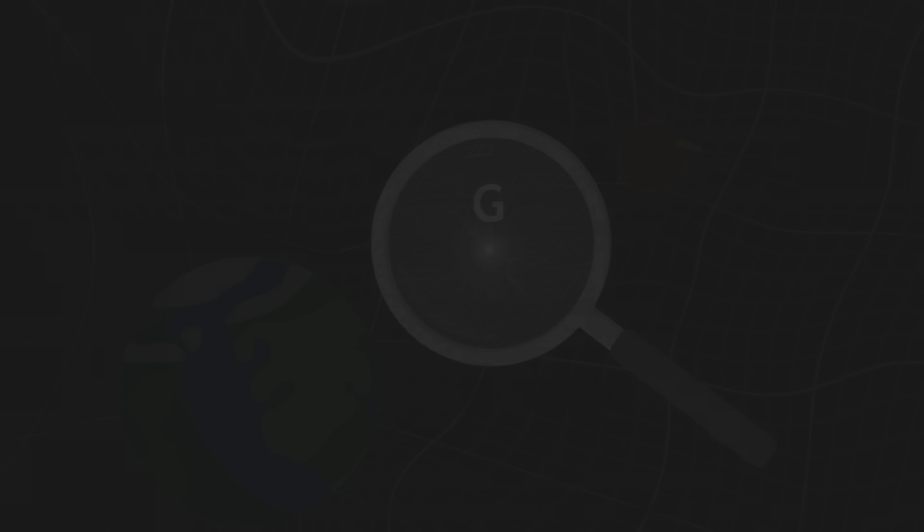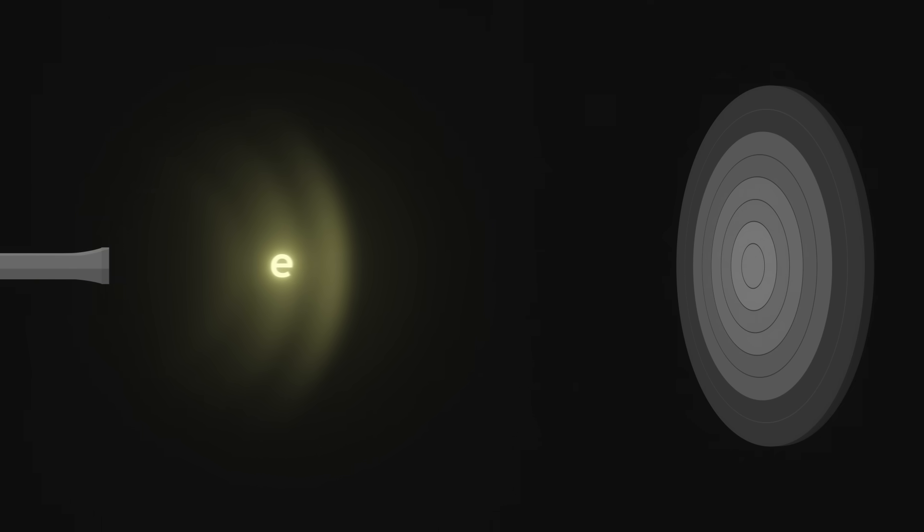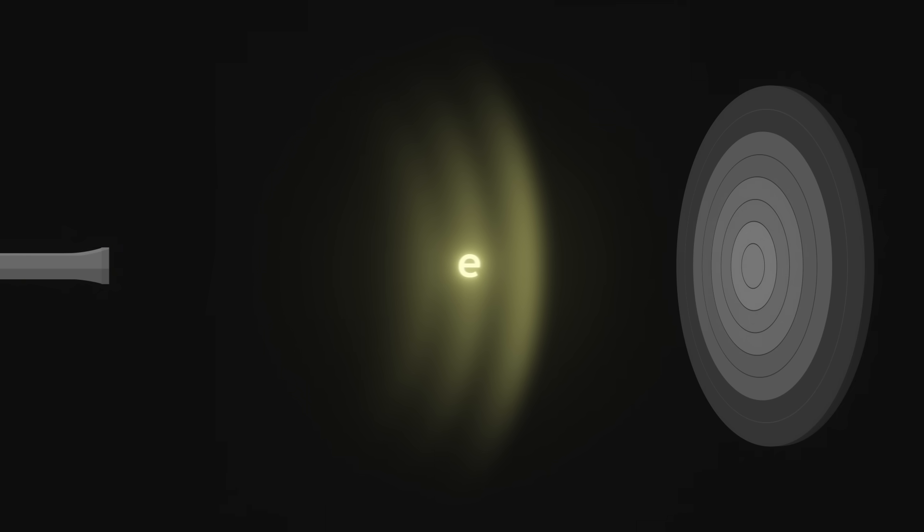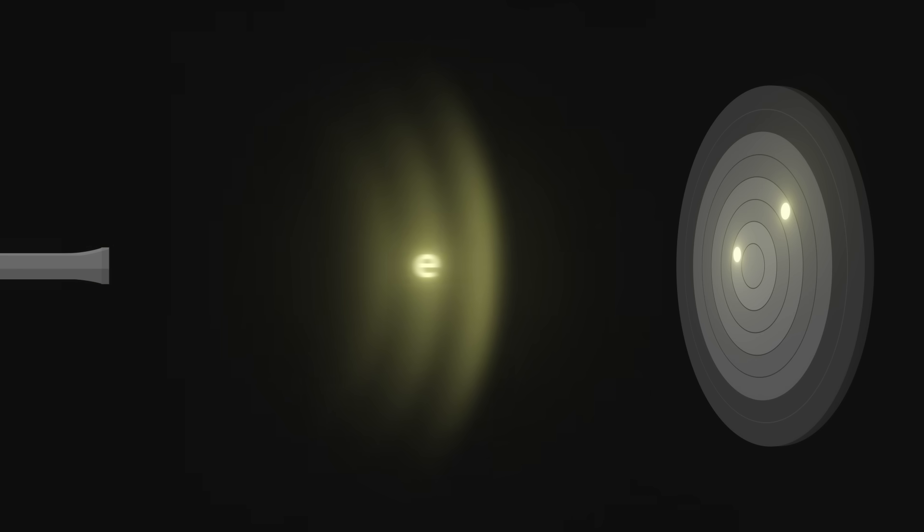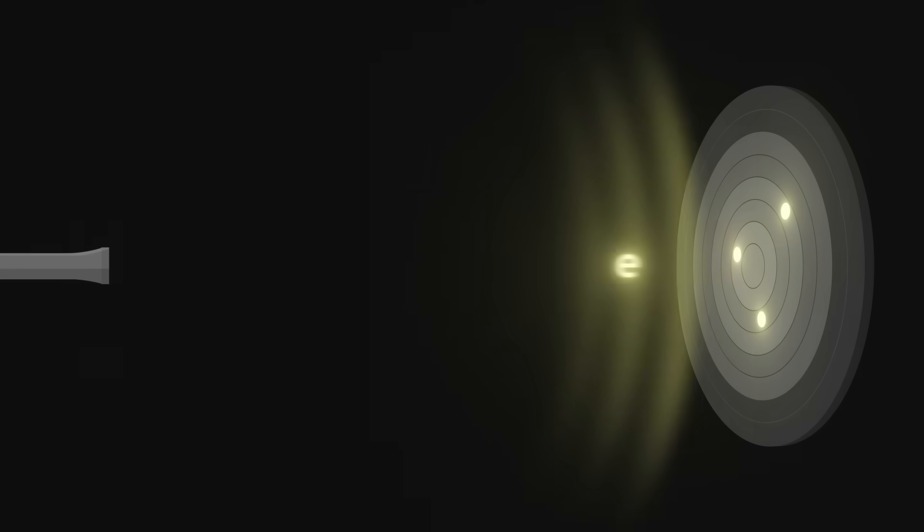We now want to understand how these strings evolve through the universe. For that, we will use the same principles as our current models. Imagine that we throw an electron at a target. The electron propagates like a wave, and when it reaches the target, we can't know for sure where it will materialize. At the quantum scale, the same experiment can give different results.